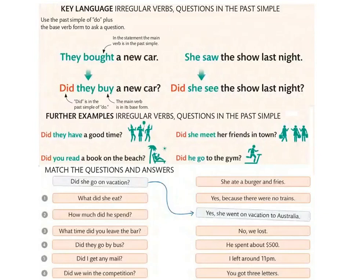More examples: Did they have a good time? (they had a good time). Did you read a book on the beach? — 'read' في الكتابة ما تتغيرش ولكن في النطق تتحول من 'read' لـ 'read'. Did she meet her friends in town? (she met her friends). Did he go to the gym? (he went to the gym).